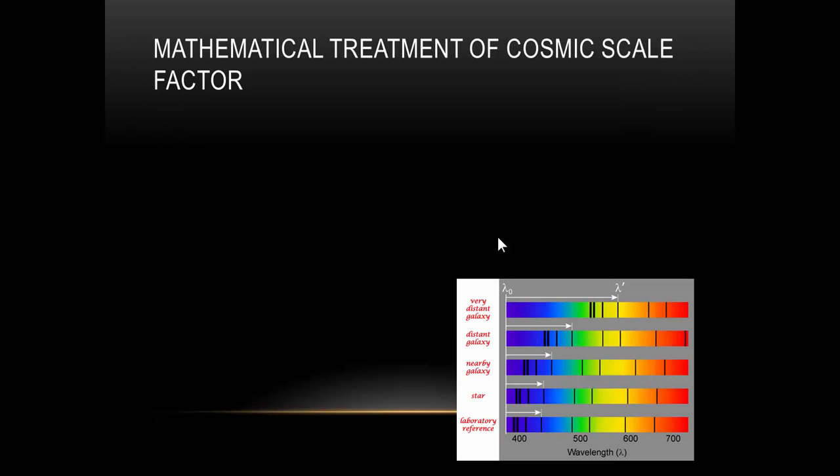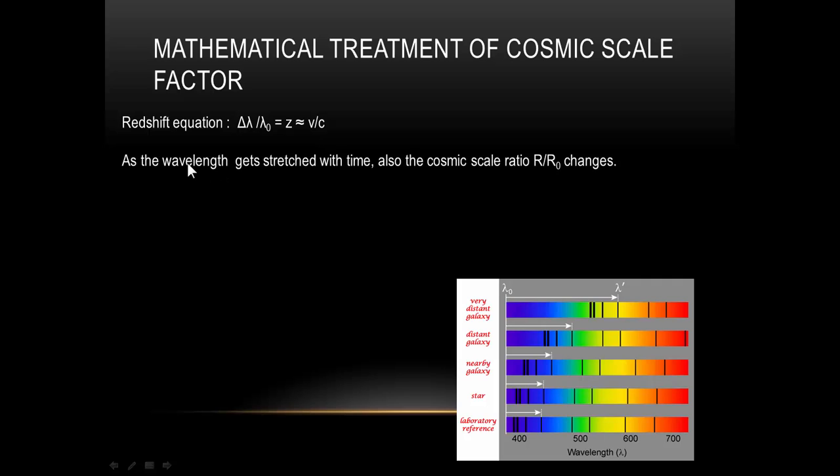Let's look at a mathematical treatment of the cosmic scale factor. The redshift equation is how much the wavelength changes compared to the original wavelength. We know that as the wavelength gets stretched with time, also the cosmic scale factor will change.